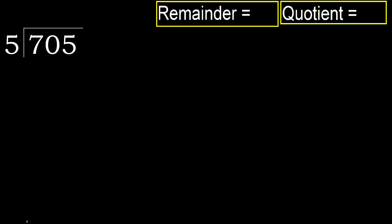705 divided by 5. 7 is not less, so with 7: 5 multiplied by which number is nearest to 7 but not greater? 5 multiplied by 2 is 10 — 10 is greater. Multiplied by 1 is 5, it is not greater. 7 minus 5 is 2.